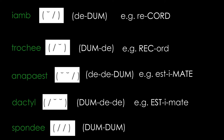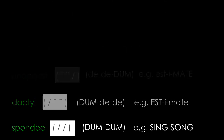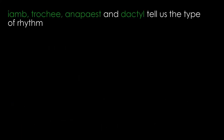Spondaic feet are substituted for other feet rather than determining a metrical pattern. So you'll never get a line of poetry written in spondaic pentameter, for example, because we don't talk purely in stressed syllables. The compound noun 'sing-song' is a spondee. So the words iamb, trochee, anapest, and dactyl tell us the type of rhythm.